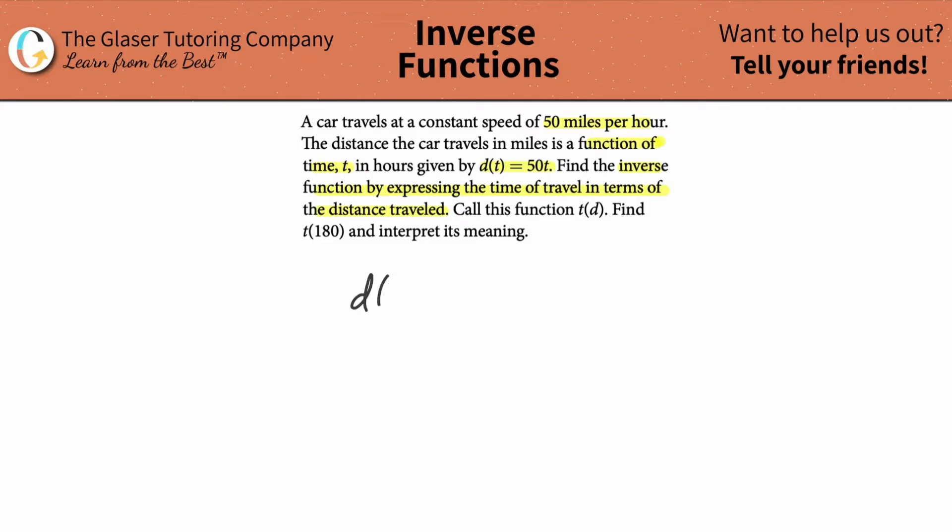This is the original function. Now what does d(t) represent? It represents just the distance, right? And this is just saying that the distance is a function of time. So as the time changes here, when you multiply by 50 you're going to get the distance.